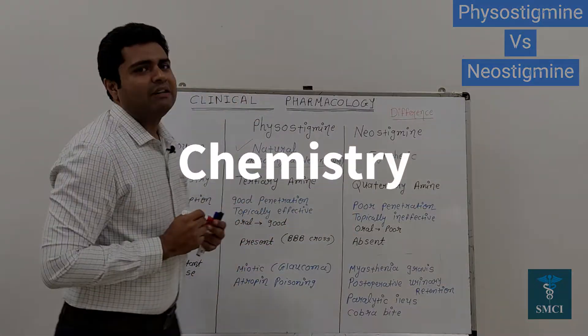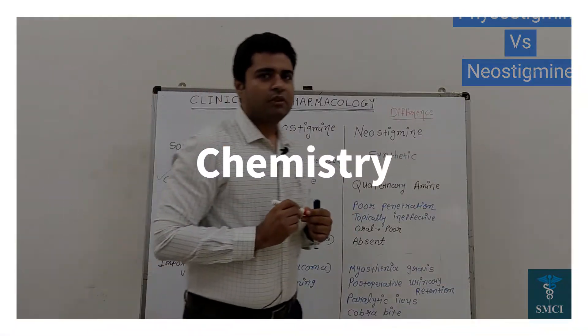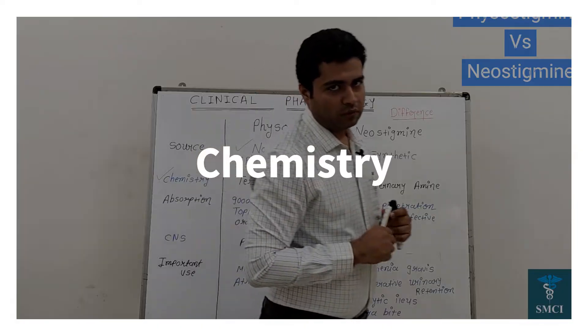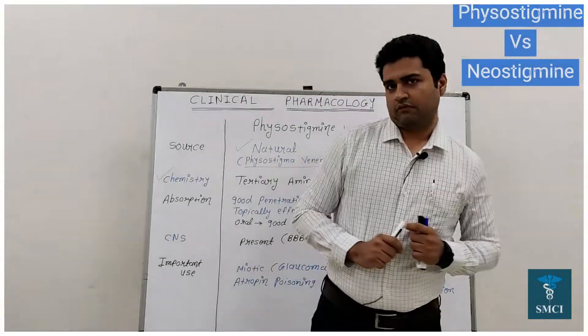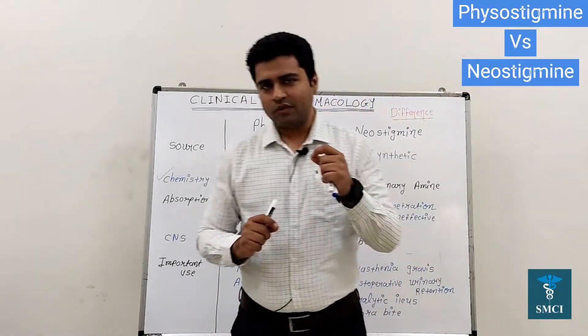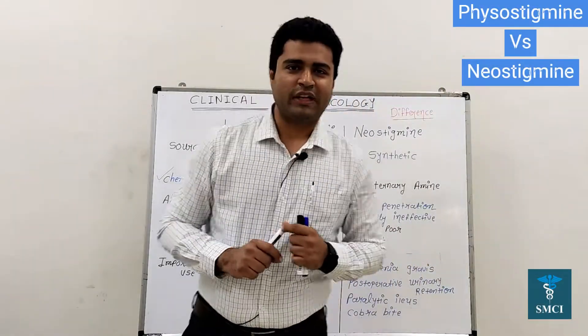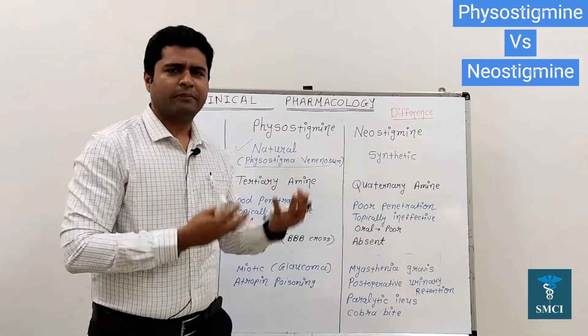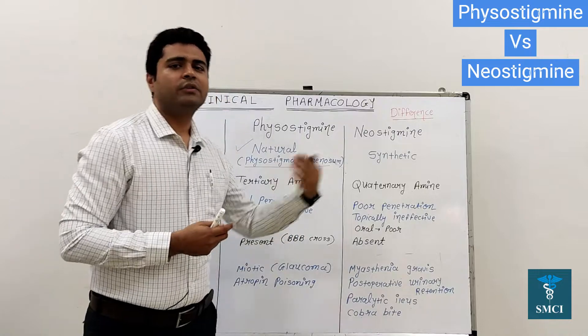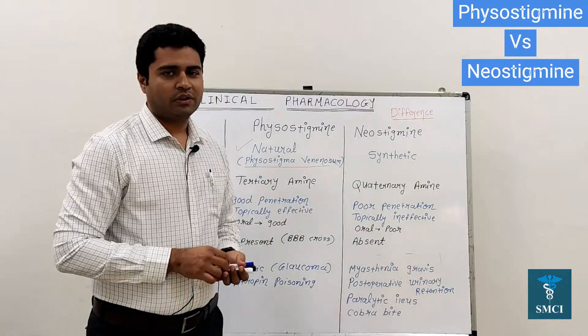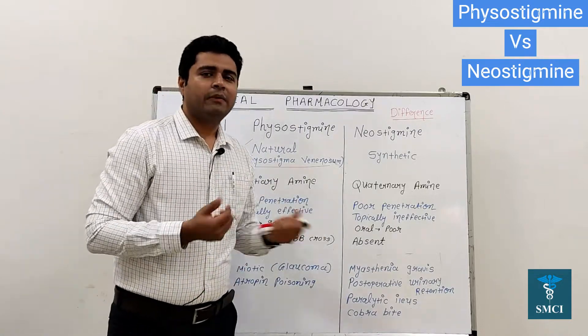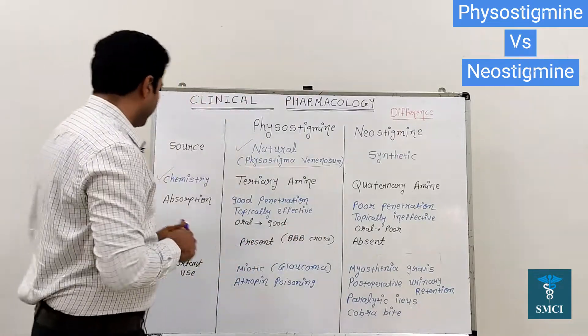According to chemistry, when we see the difference between these two drugs: physostigmine is actually a tertiary amine, and neostigmine is actually a quaternary amine.